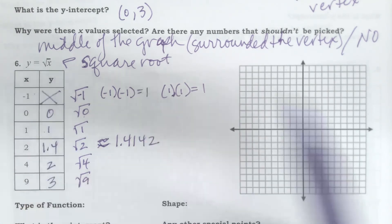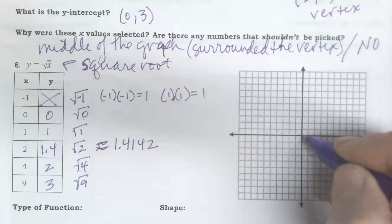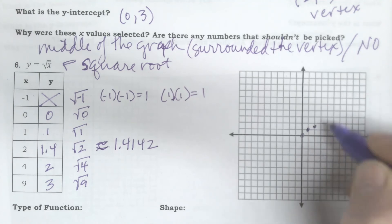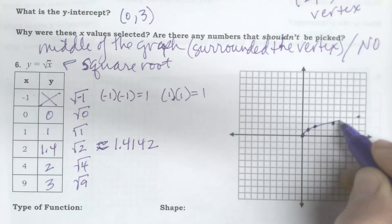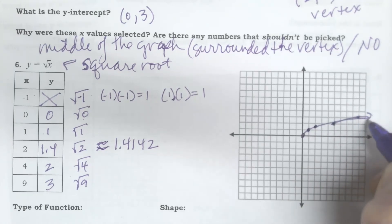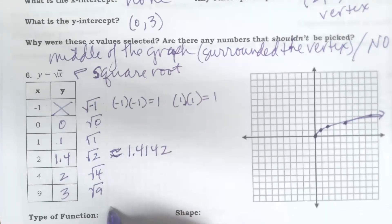But I'll plot my points. 0, 0. 1, 1. 2, 1.4. 4, 2. And 9, 1, 2, 3, 4, 5, 6, 7, 8, 9, 3. So here's my graph. This is a square root.